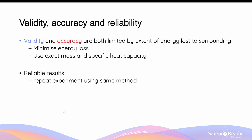When doing any experiment, it is important to understand the validity, accuracy, and reliability of the results. The numerous assumptions made in this investigation affect both validity and accuracy. The validity and accuracy of the calculated enthalpy change are limited by the extent of energy loss to the surroundings. If more energy is lost to the surrounding air, the measured temperature increase will not accurately reflect the actual energy released by neutralization, making the experimental value less accurate and the experimental design flawed — reducing the validity of the experiment.